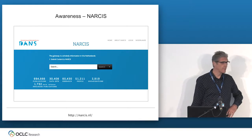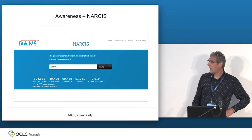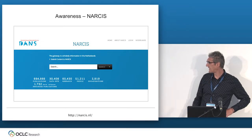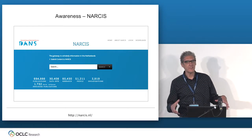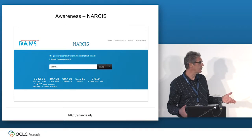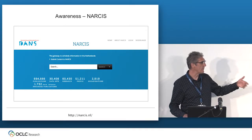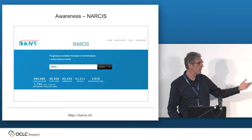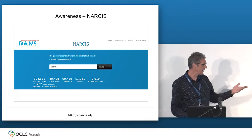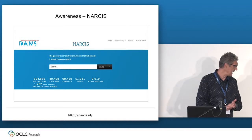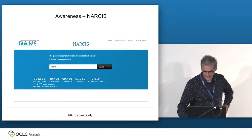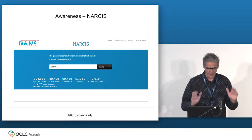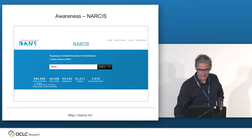NARCIS in the Netherlands — a search engine for discovery of scientific material — is an aggregation of everything related to the Netherlands. So it's not only about papers; it's also about data, researchers, institutions, research projects. I think something similar is going on in Australia. This is the notion of grouping everything in a regional context and providing one discovery mechanism for it.